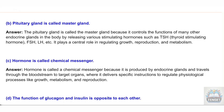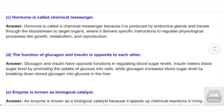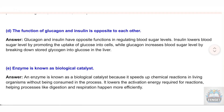D) The function of glucagon and insulin is opposite to each other. Answer: Glucagon and insulin have opposite functions in regulating blood sugar levels. Insulin lowers blood sugar level by promoting the uptake of glucose into cells, while glucagon increases blood sugar level by breaking down stored glycogen into glucose in the liver.